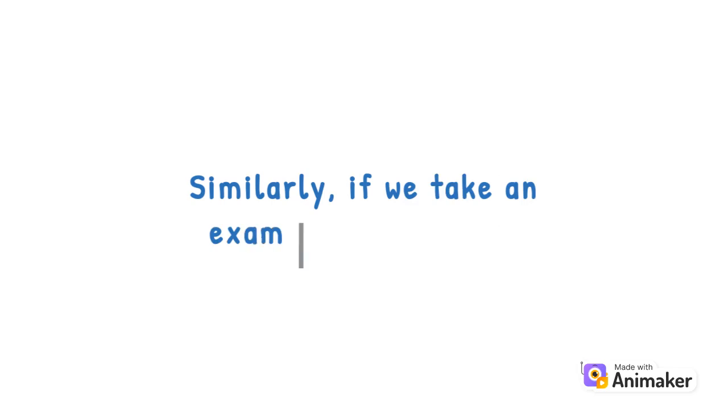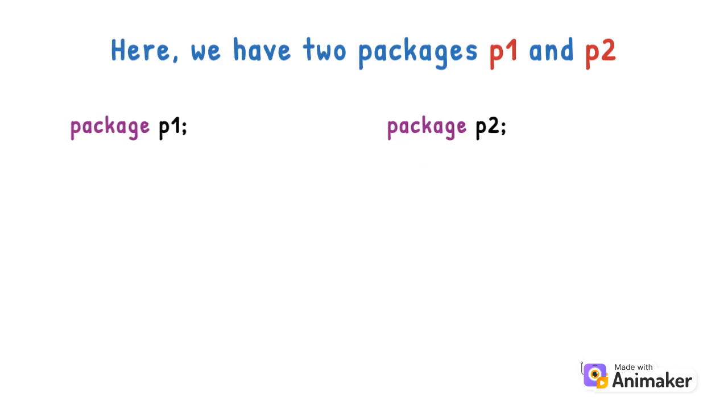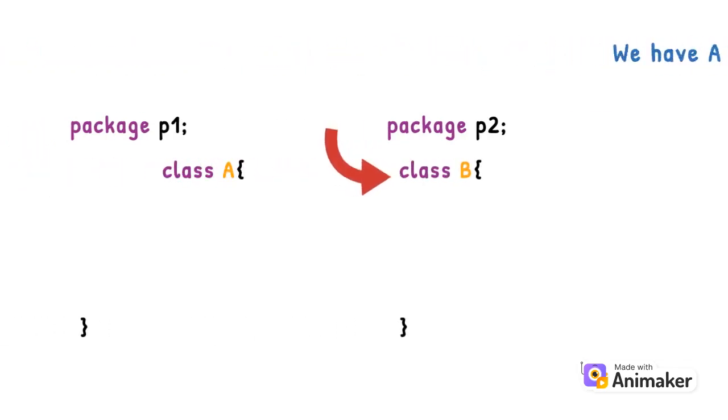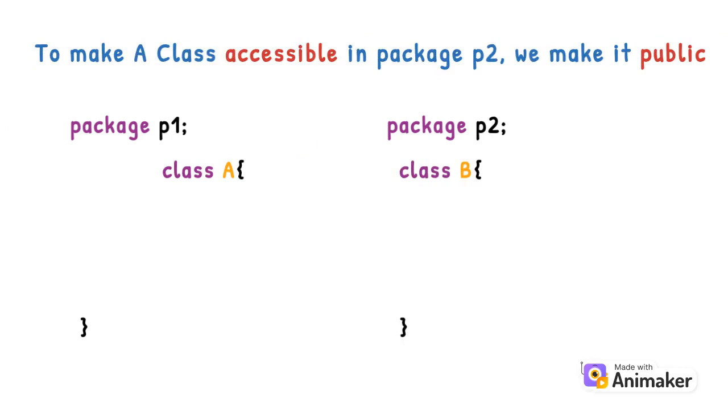Similarly, if we take an example of Java code. Here, we have two packages P1 and P2. We have a class in package P1 and B class in package P2. To make a class accessible in package P2, we make it public.